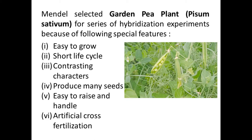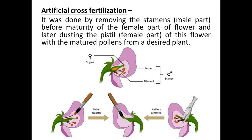The pea plant naturally performs self-fertilization — self-pollination within the same flower. But we can perform artificial cross fertilization with it. In cross fertilization, we fuse the male and female parts of different flowers rather than the same flower, and since we are doing this artificially, it is called artificial cross fertilization.